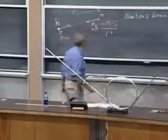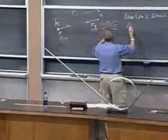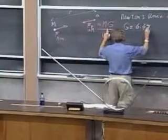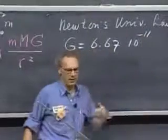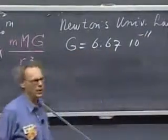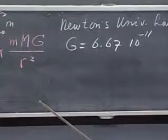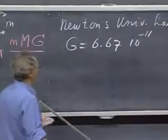The gravitational constant, G, is an extremely low number, 6.67 times 10 to the minus 11 in our SI units, which is newton square meters per kilogram or something like that. That's an extremely low number.